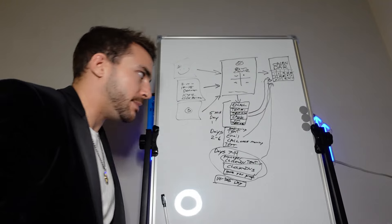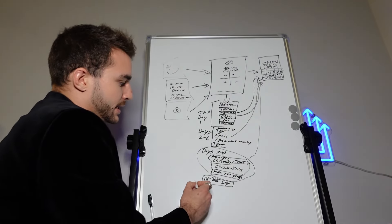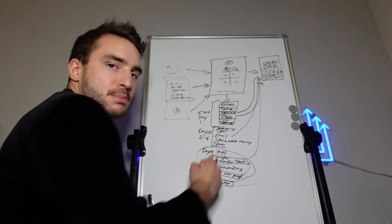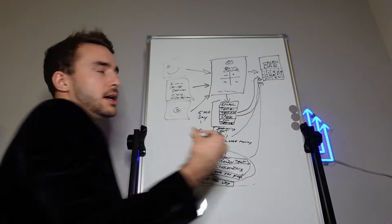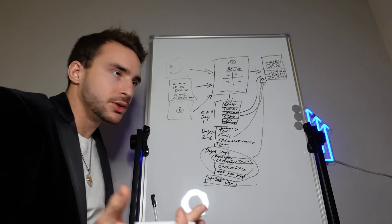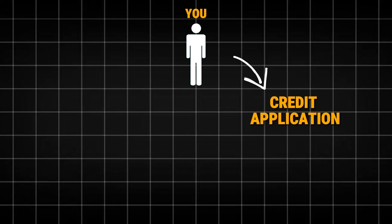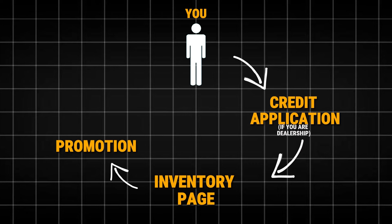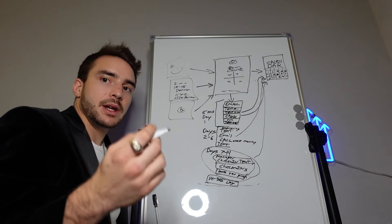If they don't respond after 14 days, we put them into a 365-day drip campaign — a couple of emails and texts a month, some more aggressive follow-up at three months, activation sequences, and so on. It's a full one-year follow-up campaign that softens over time so you're not just spamming them the whole way through.